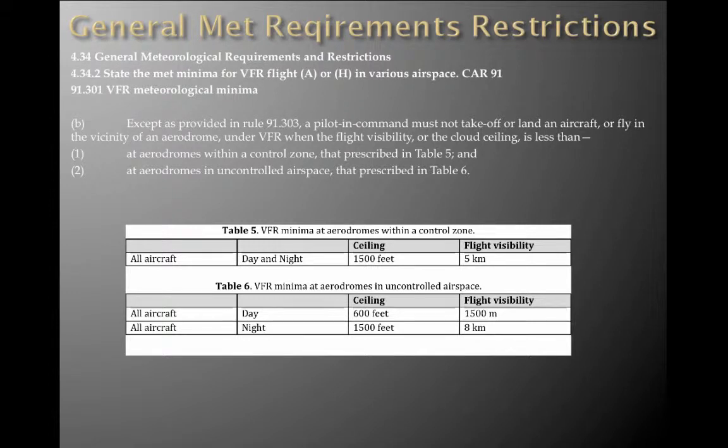Under Rule 91.301B: except as provided in Rule 91.303, a pilot in command must not take off or land an aircraft, or fly in the vicinity of an aerodrome under VFR when the flight visibility or the cloud ceiling is less than — one, at aerodromes within a control zone, that prescribed in Table 5, and two, at aerodromes in uncontrolled airspace, that prescribed in Table 6. Table 5 covers all aircraft day or night: a 1,500 feet ceiling and flight visibility of 5K. That's the VFR minima at aerodromes within a control zone — Class C, B, and F as well.